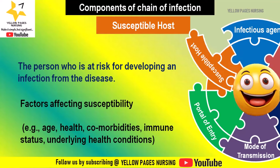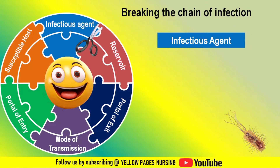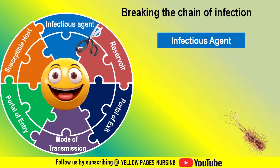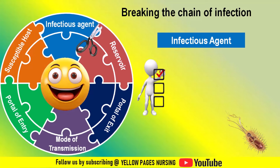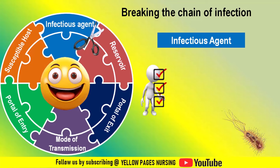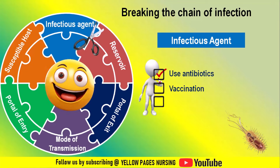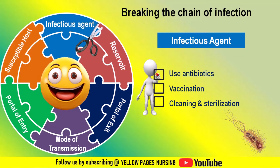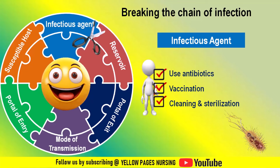Now, breaking the chain of infection. Nurses play a critical role in breaking the chain of infection through various strategies. Breaking any link of the chain can stop the transmission of infection. For the infectious agent: use antibiotics or antivirals to kill or control germs, vaccinate against diseases like flu and measles, and clean and sterilize medical tools and equipment.